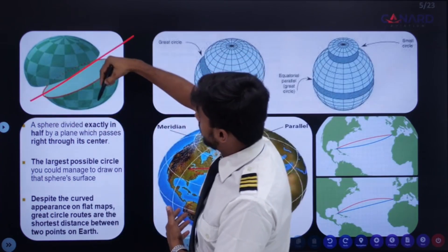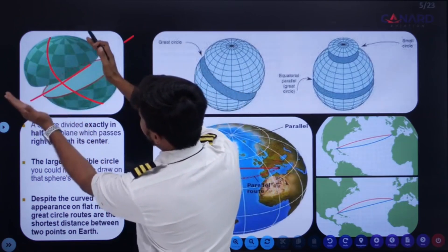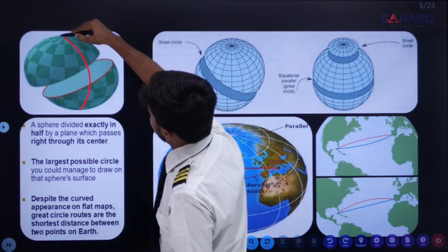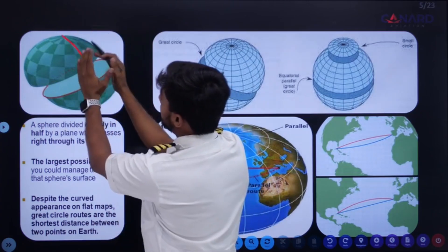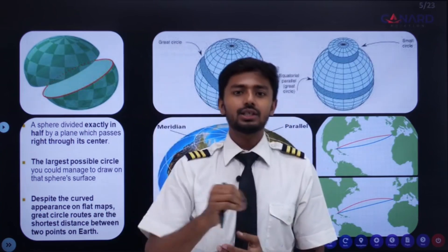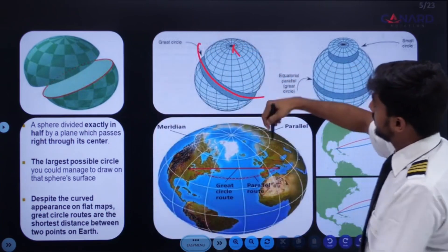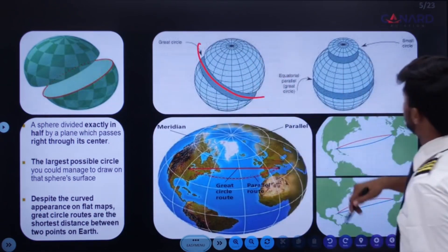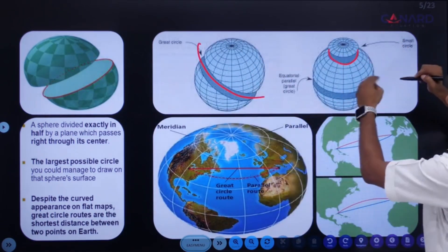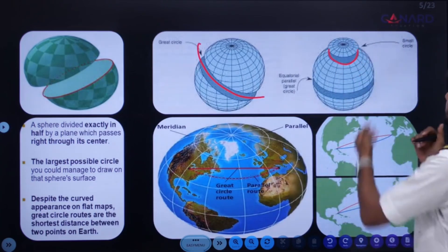If I draw a great circle here, it will divide the Earth into two equal hemispheres, and the plane of that circle will pass through the center of the Earth. You can see here, this has divided the Earth into two hemispheres. And this is a small circle — it is not a great circle because this circle has not divided the Earth into two equal hemispheres.